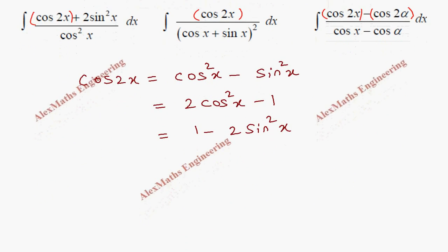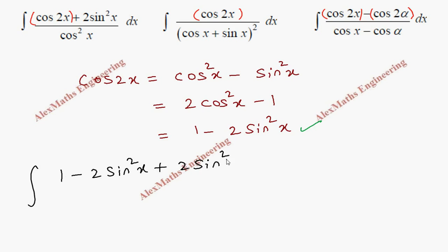For the first problem we have to use the proper formula, then it is very easy to simplify. In the numerator there is 2sin²x, so it is better to use the third formula. In place of cos 2x we substitute 1 − 2sin²x, and the last term is plus 2sin²x.